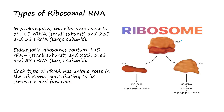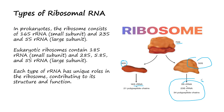The 70S ribosome is found in prokaryotes and is divided into the 30S and 50S subunits. The 30S small subunit contains 16S RNA plus 21 polypeptides. The 50S large subunit contains 5S RNA and 23S RNA plus 34 polypeptides.